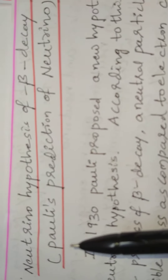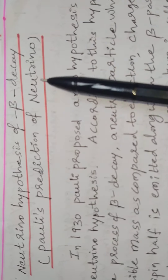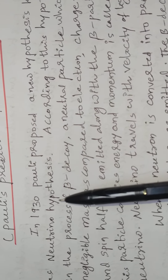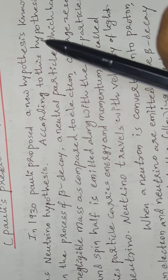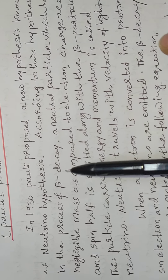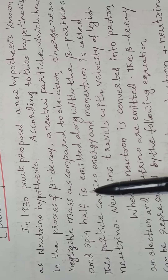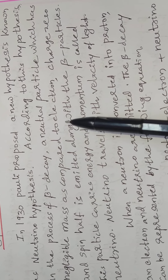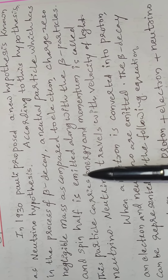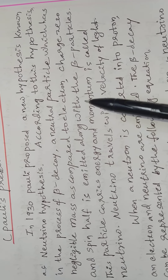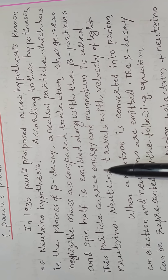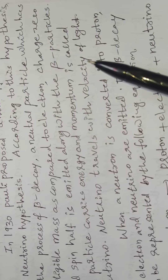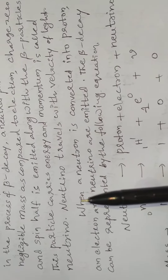Students, now we discuss the lecture on the Neutrino hypothesis of beta decay, or Pauli's prediction of the Neutrino. In 1930, Pauli proposed a new hypothesis known as the Neutrino hypothesis. According to this hypothesis, in the process of beta decay, a neutral particle with negligible mass compared to the electron, charge zero, and spin one-half is emitted along with the beta particles. This particle carries energy and momentum and is called the Neutrino. The Neutrino travels with the velocity of light, so it resembles a photon.